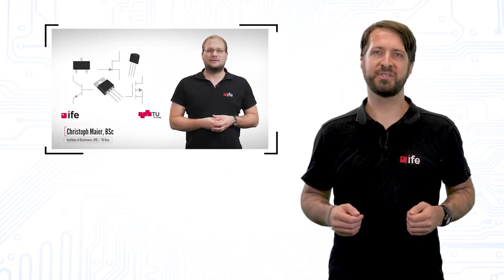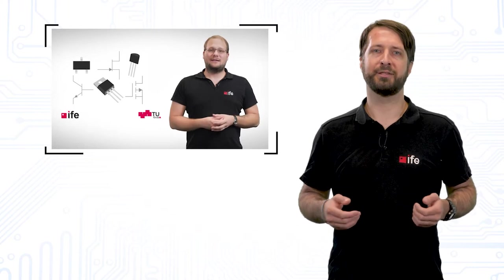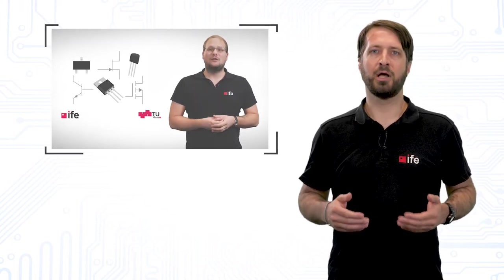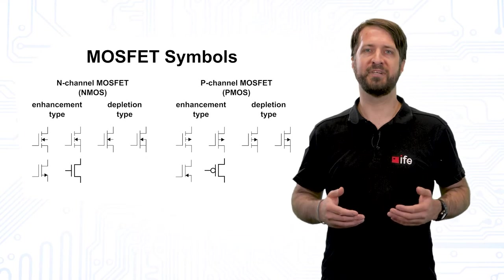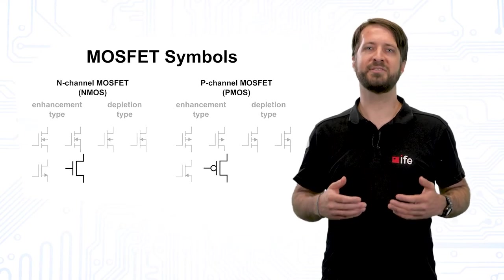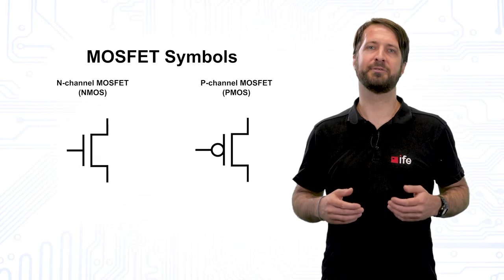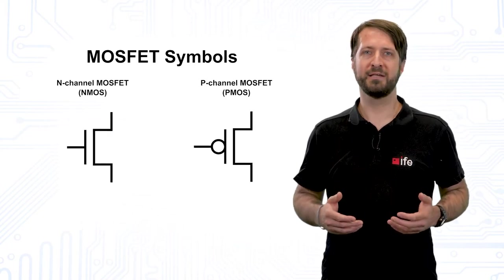For this video, you should know some basics about MOSFETs, so if you want to catch up on these topics, you may want to have a look at some of our other videos first. Now, let's start with some basics. CMOS circuits consist of pairs of MOSFET transistors which switch at opposite input levels. Hence, we need NMOS and PMOS transistors, which have many different symbols. For this video, we will use these two simplified symbols because they convey all the information we need for our circuits.